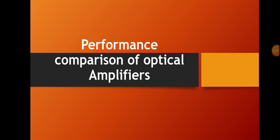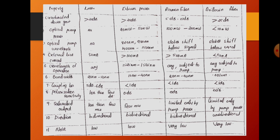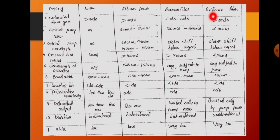Dear students, in this session we are going to discuss the comparison of performances of various optical amplifiers. We are comparing erbium fiber, Raman fiber, and Brillouin fiber with the laser. A section of erbium fiber and Raman fiber will act as amplifiers. We are comparing 11 different properties of these amplifiers.